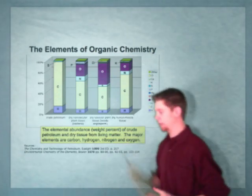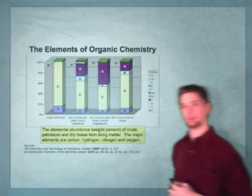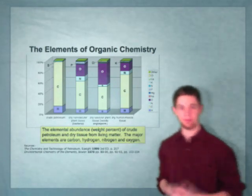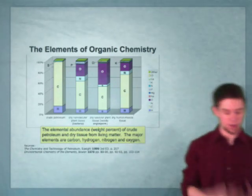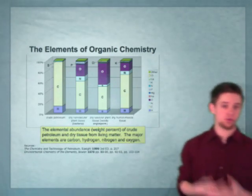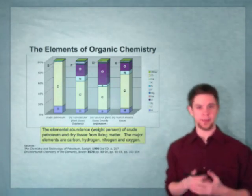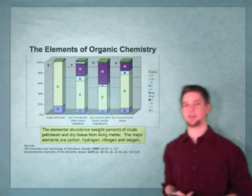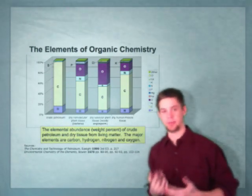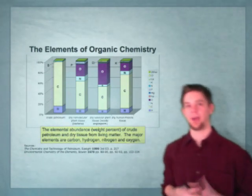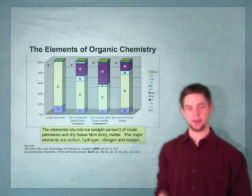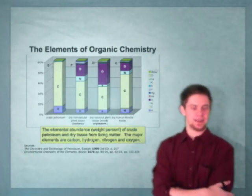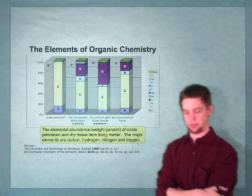This bar graph shows the elemental composition of many of the things important to life and the byproducts of life, showing us just how important organic chemistry is to biology and the study of how life works. Biology at its root is chemistry, and the vast majority of it is actually organic chemistry.